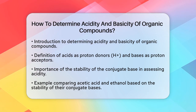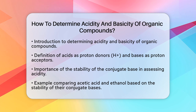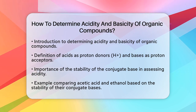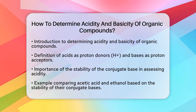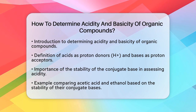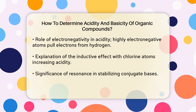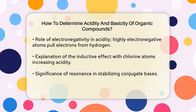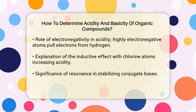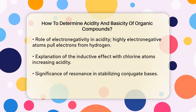For example, if you compare acetic acid and ethanol, acetic acid is more acidic because its conjugate base, the acetate ion, is more stable due to resonance. Resonance allows the negative charge to be spread over two oxygen atoms, making the acetate ion more stable than the ethoxide ion, which is the conjugate base of ethanol.